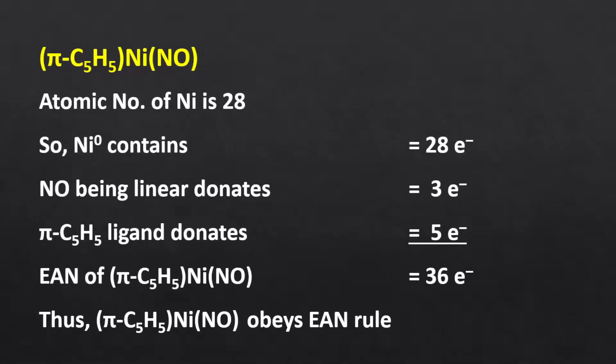In this complex, nitrosyl is bonded with a transition metal from the 3D series. Hence, it must be the linear structure nitrosyl, which is a 3 electron donor. Thus, 28 electrons from nickel, 3 from linear nitrosyl, and 5 from pi-cyclopentadienyl. Consequently, the effective atomic number of this complex is 36 and it is also a stable complex.